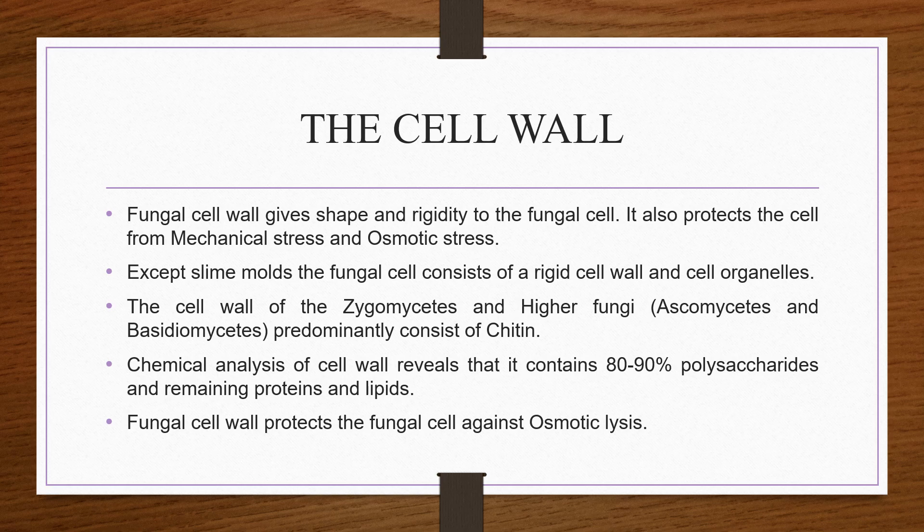The cell wall of zygomycetes and higher fungi predominantly consists of chitin. Chitin forms layers to create a thick and tough wall structure. Chemical analysis of the fungal cell wall reveals that it contains 80–90% polysaccharides, with the remaining portion being proteins and lipids. The fungal cell wall protects the cell against osmotic lysis.